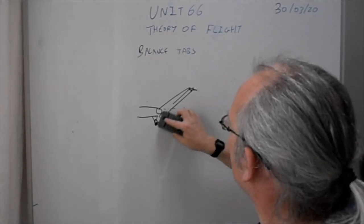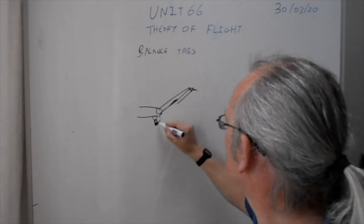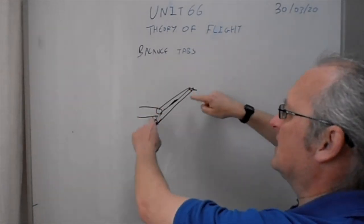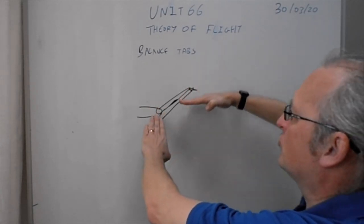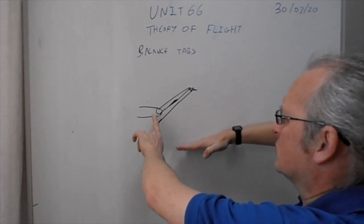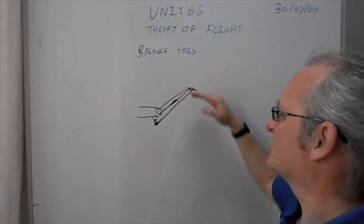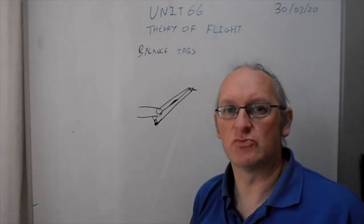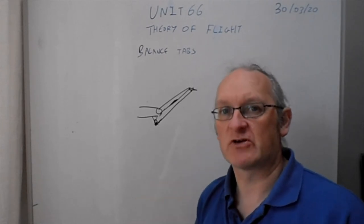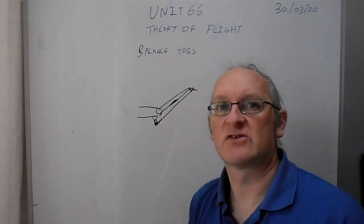So — easy to get mixed up between trim and balance — but the key point is: the balance tab automatically moves in the opposite direction to the main control surface, and it does that via a fixed linkage. If you draw that fixed linkage on your diagram and explain it, that covers the mechanical operation. So that's trim tabs and balance tabs covered.